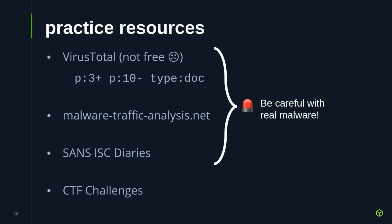If you're excited about looking at some documents, where do you go from here? You're going to want a place to practice. One of my favorites is VirusTotal — unfortunately it's not free; in fact it's very expensive, probably something your company has access to rather than something you'd buy on your own. But if you do have access to the paid version, you can do searches like the one on screen here: show me things that are type:doc with three or more antivirus detections but fewer than ten.